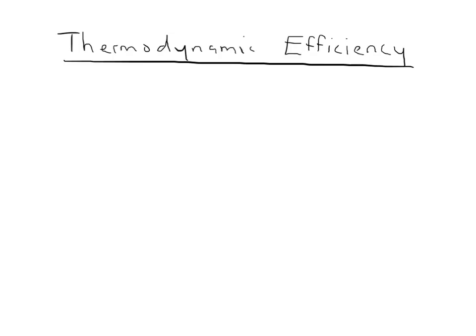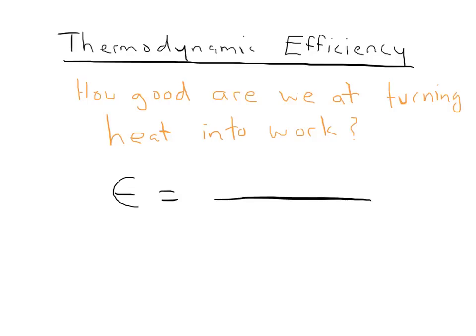In this video, we're going to be talking about thermodynamic efficiency. Thermodynamic efficiency asks a simple question: how good are we at turning heat into work? Writing this in a more quantitative way, we can define an efficiency, which is epsilon, and that's going to be equal to the total work out divided by the total heat in.